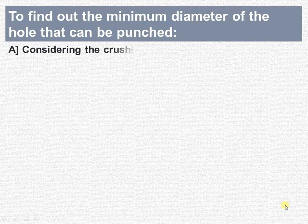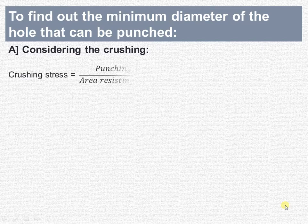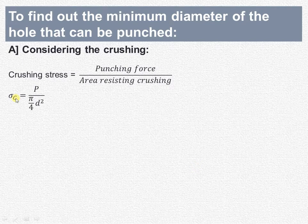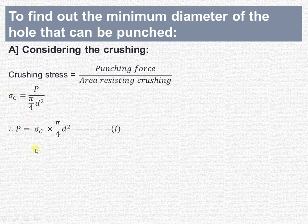Using this particular concept, let us try to understand how to find out the minimum diameter of the hole that can be punched. First we will consider crushing. The crushing stress induced will be equal to the punching force divided by the area resisting crushing. Crushing stress is denoted by σ_c, so it is equal to P divided by π/4 d². Cross-multiplying, π/4 d² × σ_c equals P.